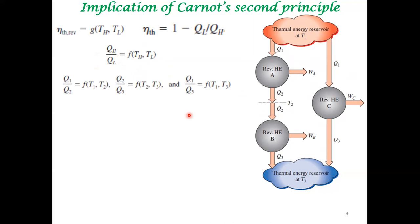I would say that this is simple algebra. Q1 by Q2 is just F of T1 by T2, and so on. Then I can show that Q1 by Q3, I can write it in this manner, following which I can write that function T1, T3 is a multiplicative product of this function times this function.